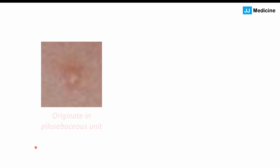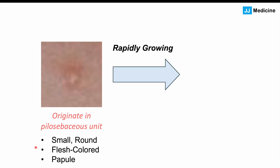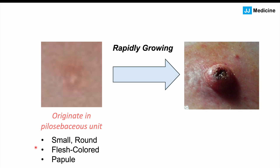Now let's talk about the clinical features of this skin lesion. A lot of times, the lesion will start off quite subtly — it originates in the pilosebaceous unit. It can often start out small, round, flesh-colored or slightly off-colored. It can be a papule, a raised skin lesion less than 5 to 10 millimeters in diameter — something inconspicuous, but over time, we can see a rapid growth into a much more prominent lesion.